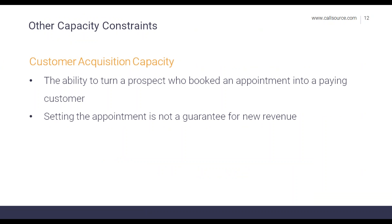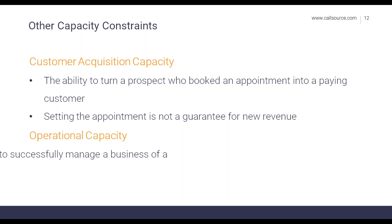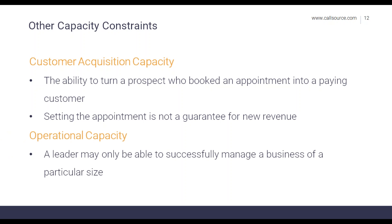There are a few other capacity constraints a business might face. Customer acquisition capacity is the ability to turn a prospect who booked an appointment into an actual paying customer — just because someone booked doesn't guarantee they'll buy, and struggling to convert appointments into customers represents a growth constraint. Operational capacity refers to limitations within the organization itself — for example, time. If a business owner doesn't have enough time to generate new marketing campaigns or train call handlers, they'll need to invest in additional personnel. This isn't something we can measure directly with our analytics, but we can assist in overcoming these constraint points.